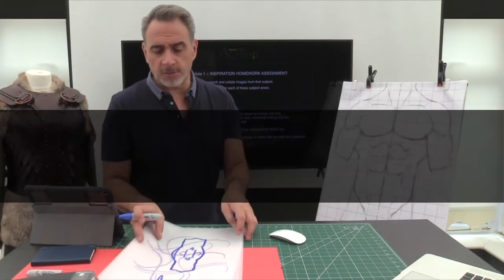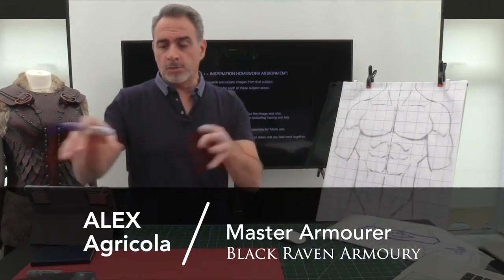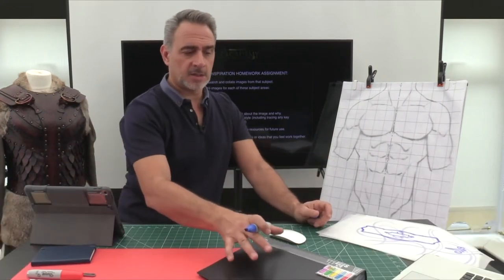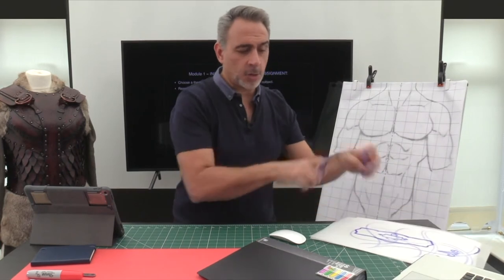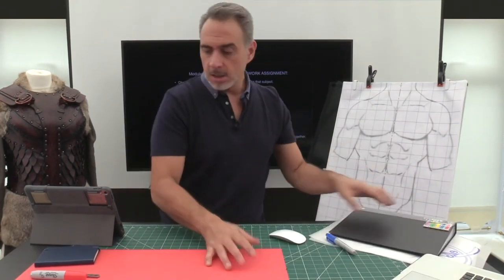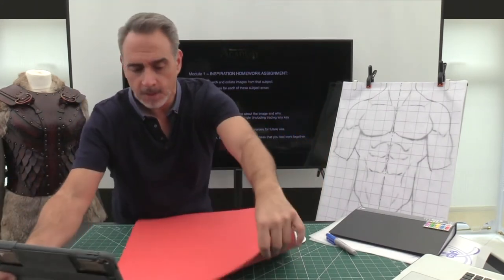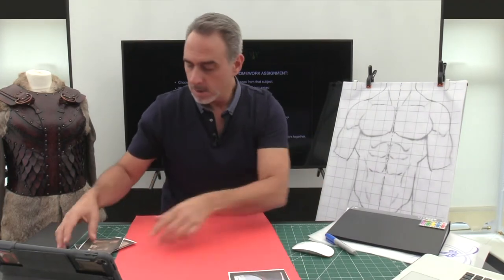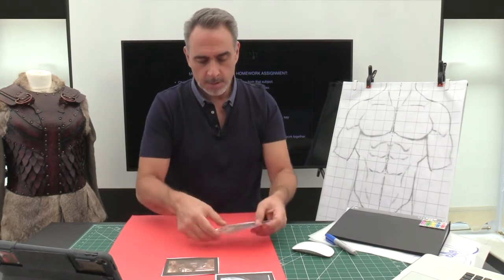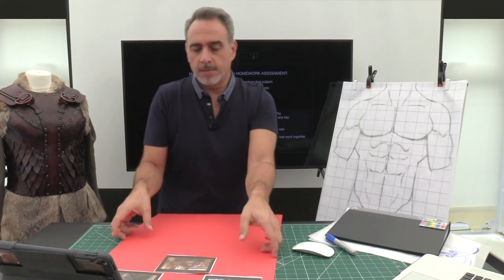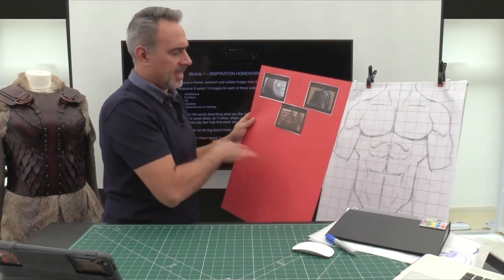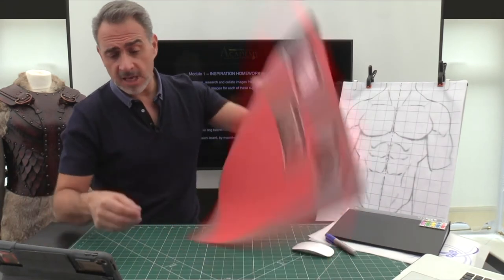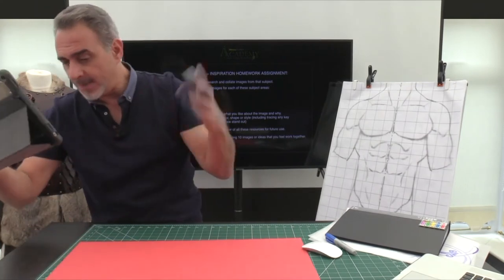This is a stage where you're first getting together your resource library, building all those things — the photos, the images that are going to spark off the little ideas. You're going to collect those together, get yourself a sample board, and start to put together ideas you could use later on. That's your inspiration board, just to keep everything in the flow. Keep a notebook handy.